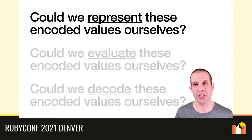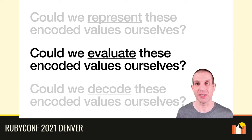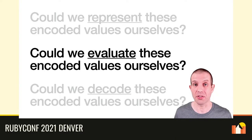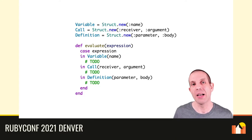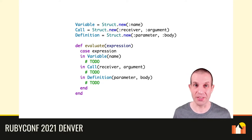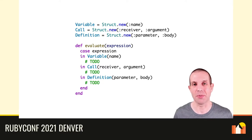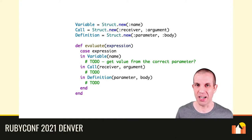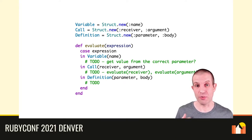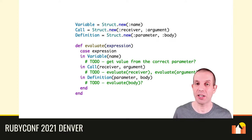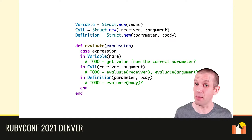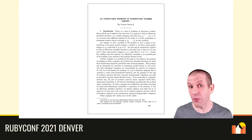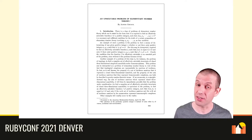So now we have our own representation of these proc encodings. Can we do the work of evaluating them ourselves so that we're not relying on the behaviour of Ruby procs to compute 2 plus 3 or FizzBuzz or whatever? That would mean implementing some method called evaluate that can take an abstract syntax tree and evaluate it somehow. A variable will refer to the parameter of some proc that it's inside, a call will have a receiver and argument that need evaluating, and for a definition we need to evaluate its body at some point but only when it appears as part of a call. This all seems a bit complicated, and I'm afraid I'm not clever enough to work it out myself. But fortunately, a mathematician called Alonzo Church wrote a paper in 1935 that explains how to do it.